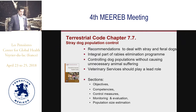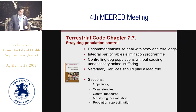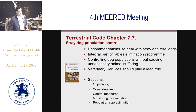Moving to chapter 7.7 on stray dog population control — this chapter is within the section on welfare, very much linked to the welfare of dogs, but its introduction recognizes that stray dog population control should be considered an integral part of rabies elimination programs. The aim is to control dog populations without causing any suffering to animals. Veterinary services play an important role in controlling stray dog populations.